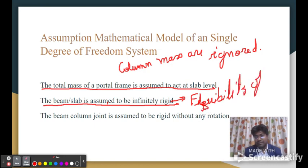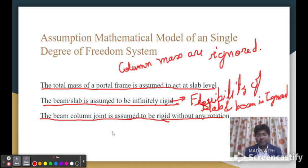The third point: the beam-column joint is assumed to be rigid without any rotation. Since the building is made monolithically, we assume that torsion will not be created, so the joint can be assumed rigid without any rotation at the joint.